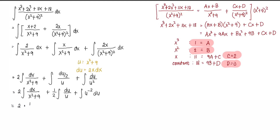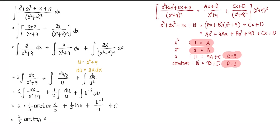Evaluating each integral — noting a = 3 for the arctan formula — gives (2/3) arctan(x/3) + (1/2) ln|x² + 9| + u⁻¹/(−1) + C. Our final answer is (2/3) arctan(x/3) + (1/2) ln(x² + 9) − 1/(x² + 9) + C.